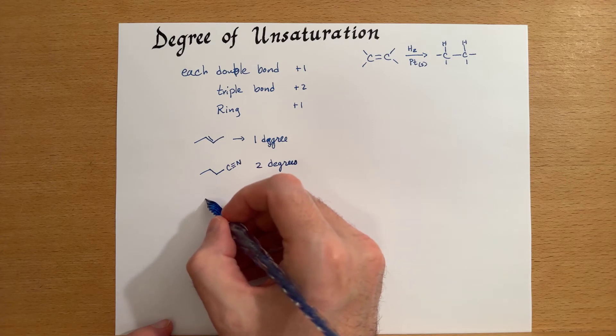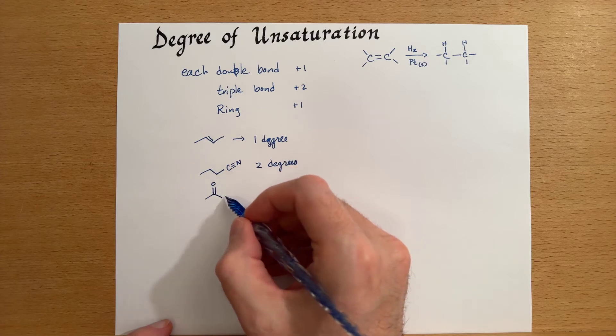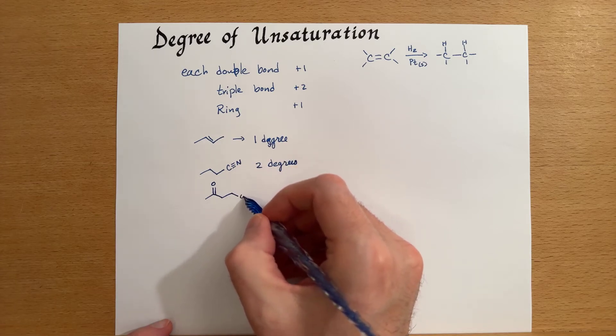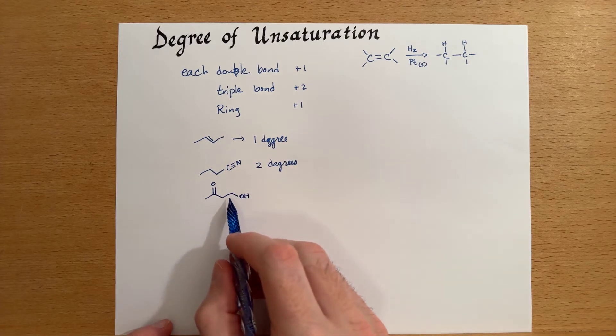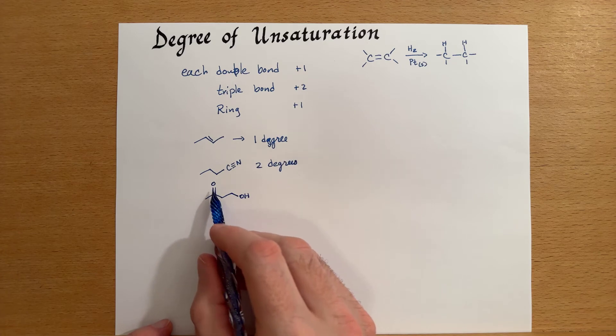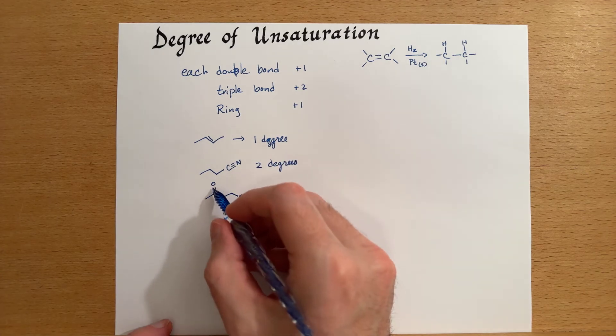Another example of this could be a ketone. And this has one degree of unsaturation due to this double bond.